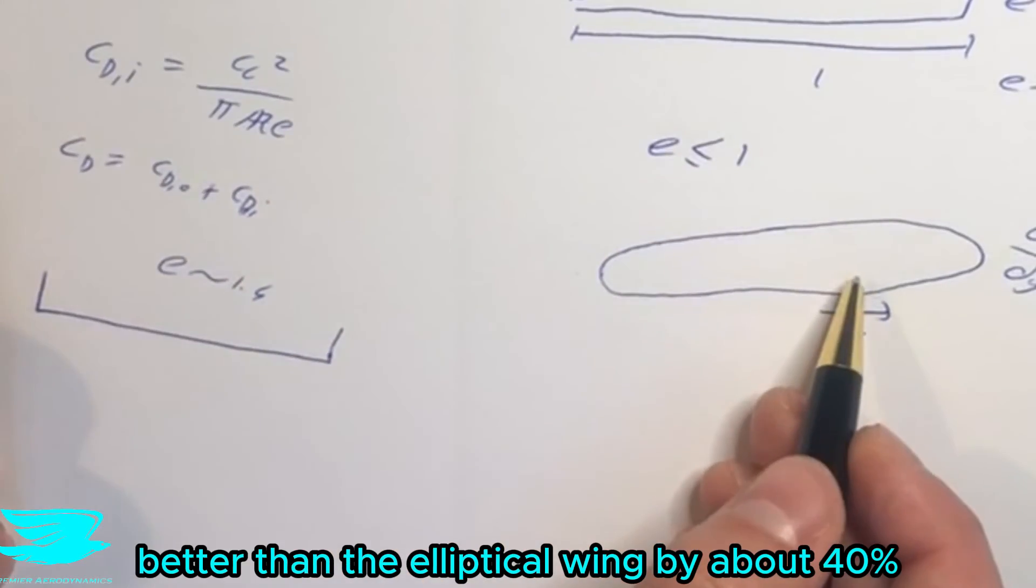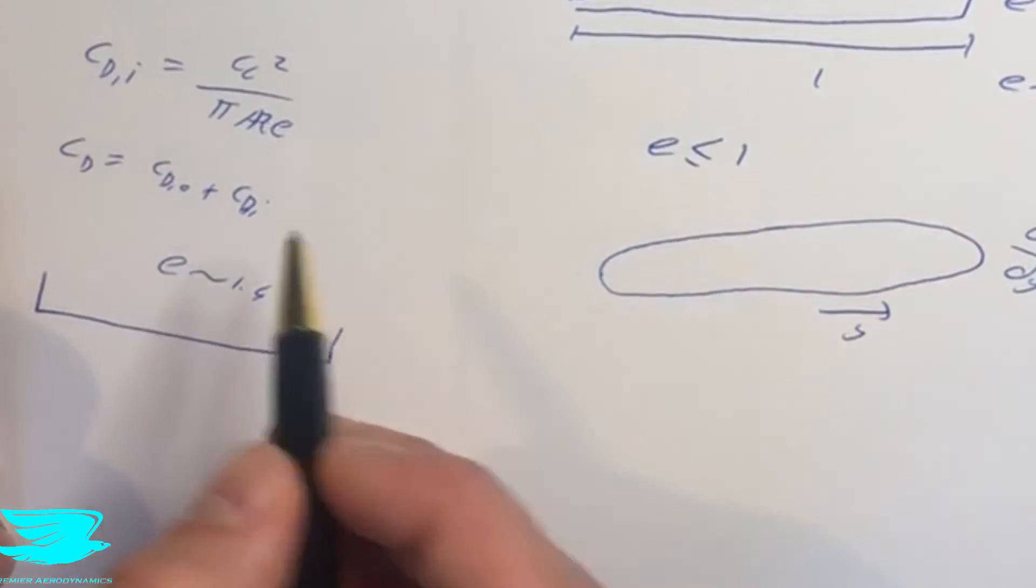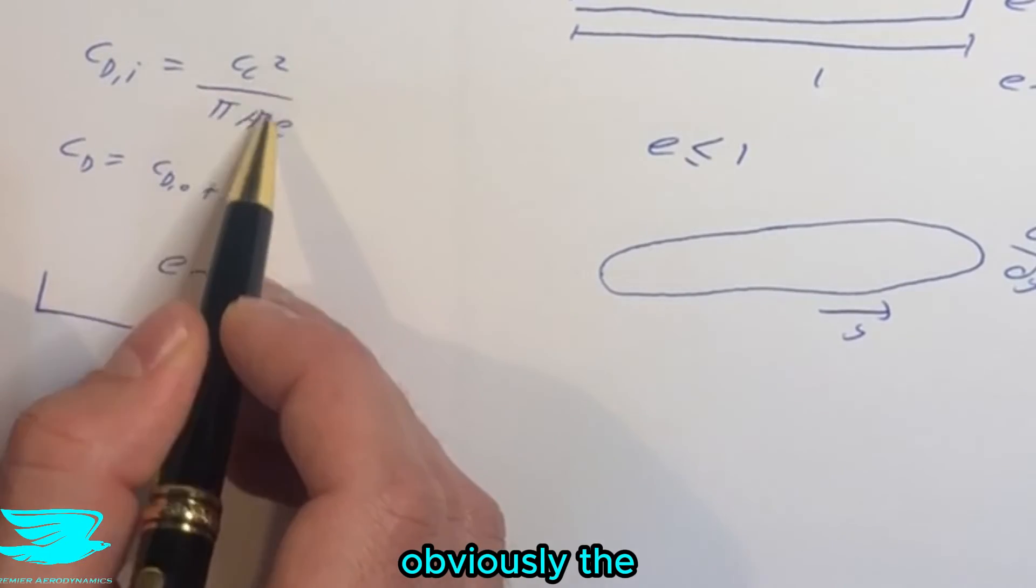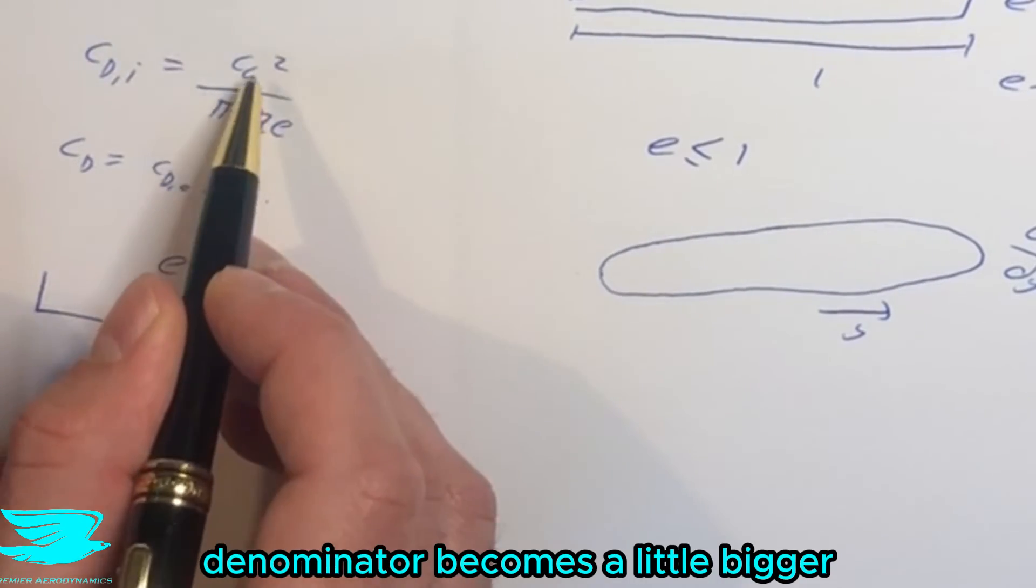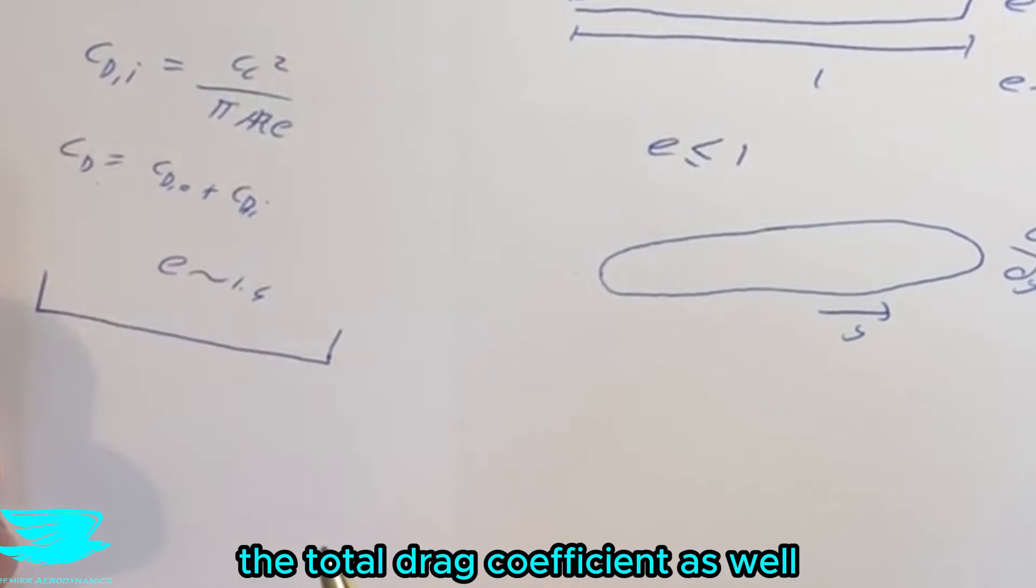So we can already see it's better than the elliptical wing by about 40%. And if we were to plug this value in here, obviously the denominator becomes a lot bigger than the numerator. That drops the induced drag and that drops the total drag as well.